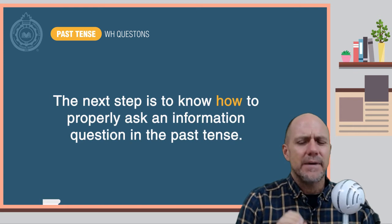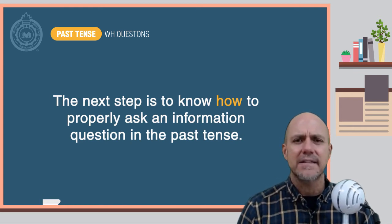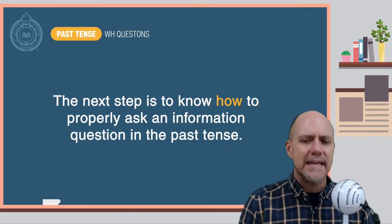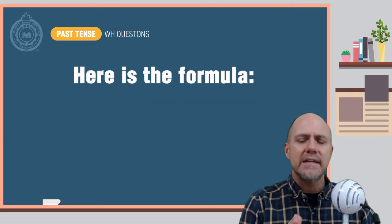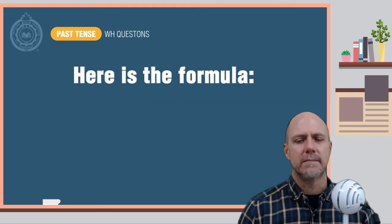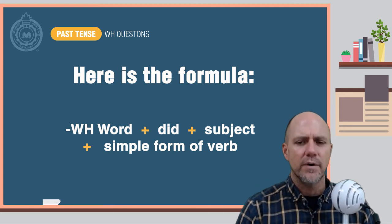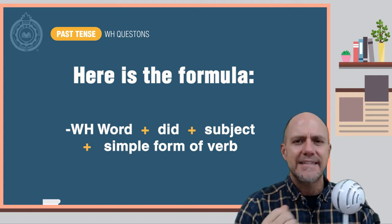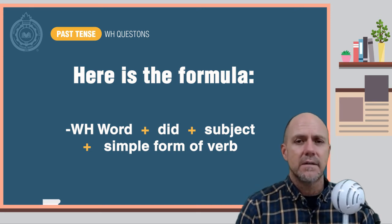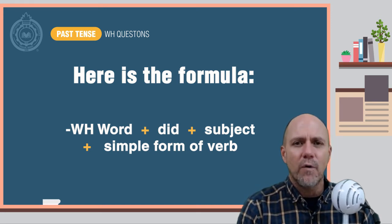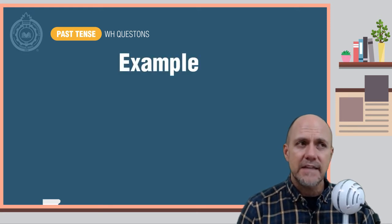The next step is to know how to properly ask an information question in the past tense. Here is the formula. You start with the WH word, plus DID, plus the subject, plus the simple form of the verb. Here is an example.